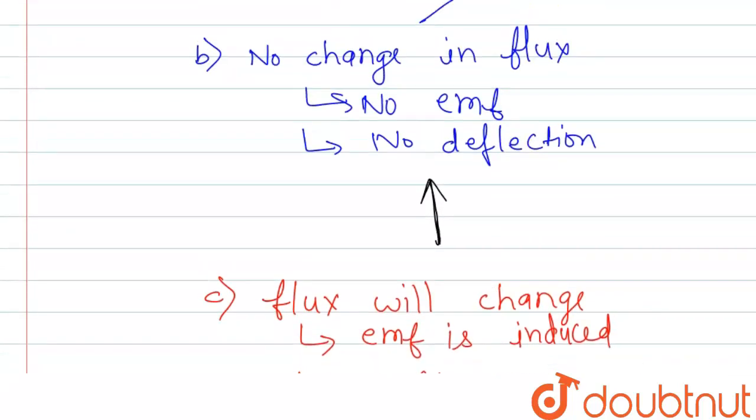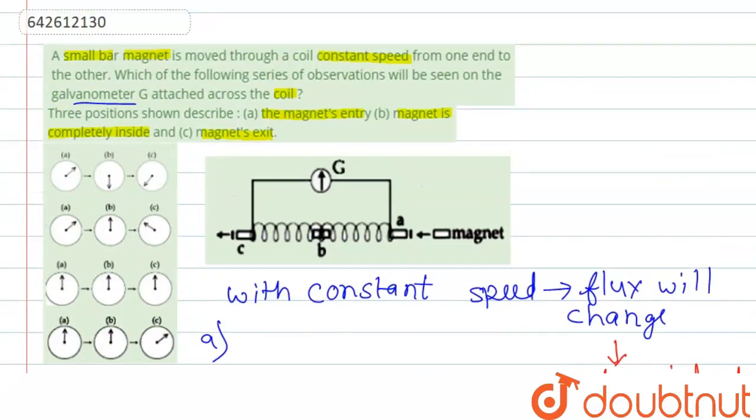So if we check the options, we have the second option. Here we see that in the middle, that is when the magnet is inside in the middle, there is no deflection.